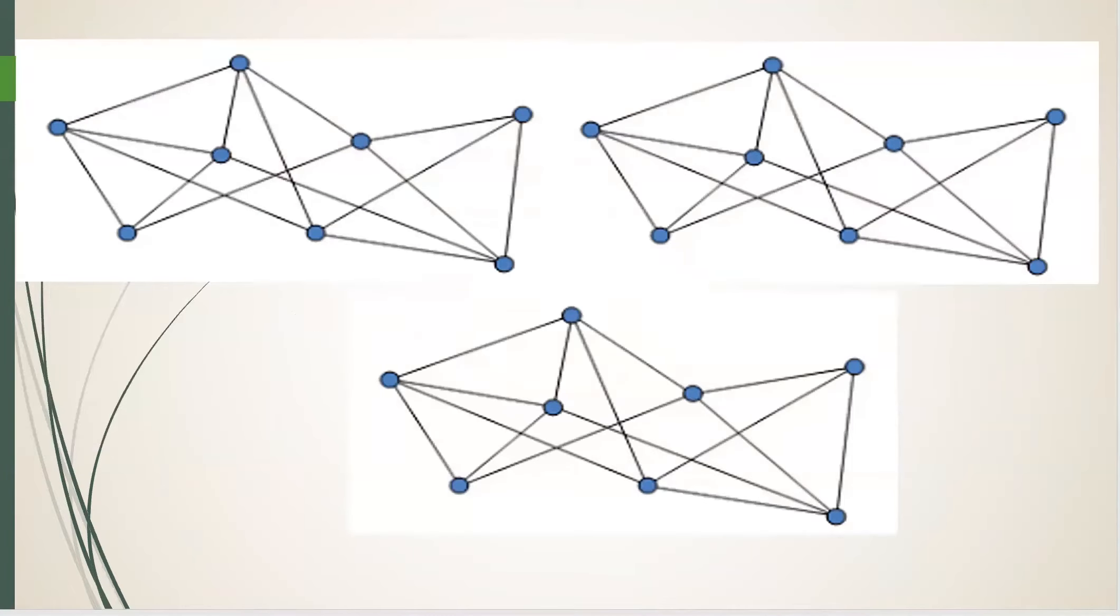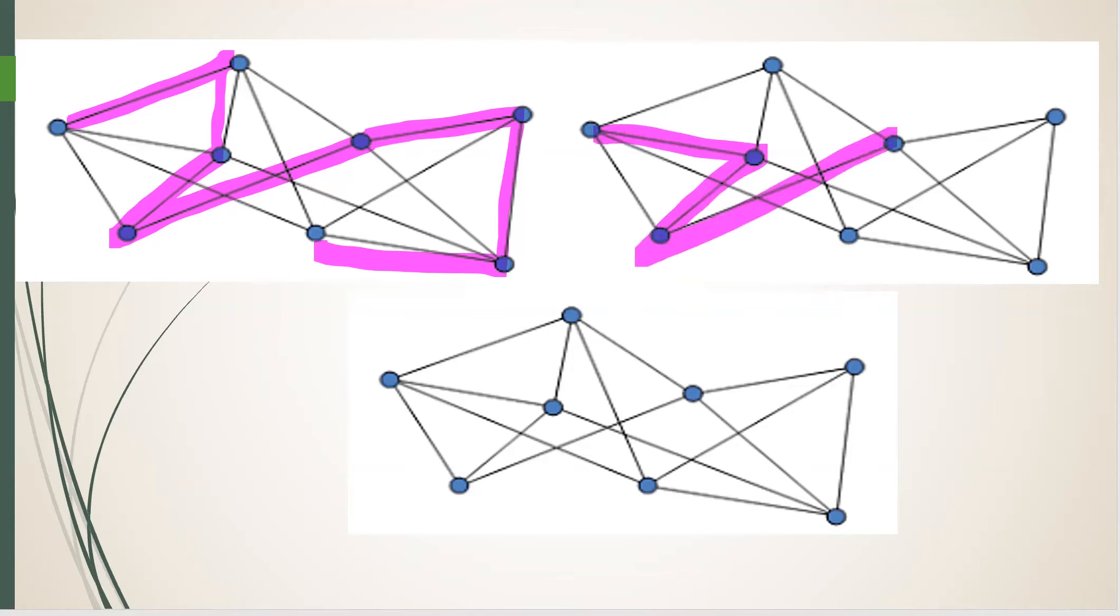Another example. This graph has many possible Hamiltonian paths. Here's one. And here's another.